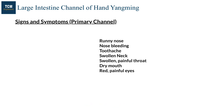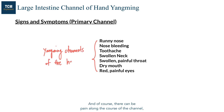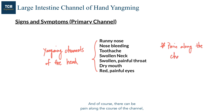These are signs and symptoms on the head where the Yangming channels go. Of course, there can also be pain along the course of the channel, such as the lateral aspect of the arm.